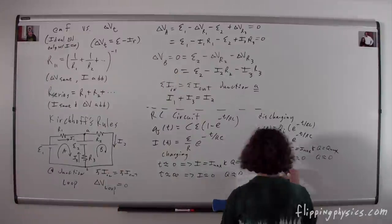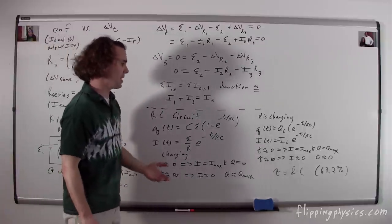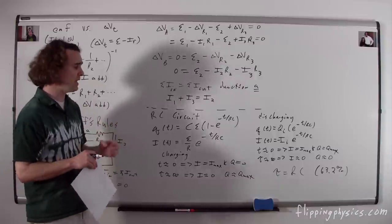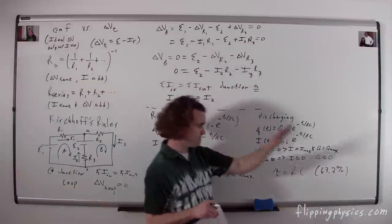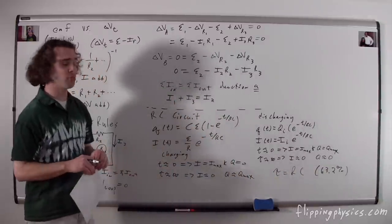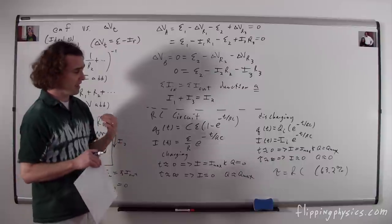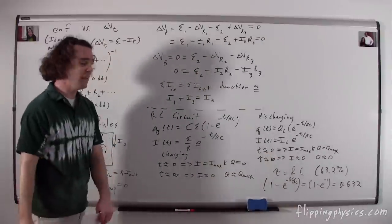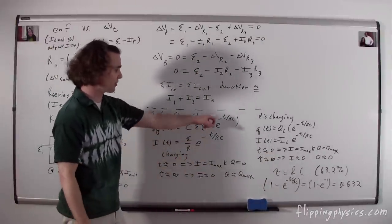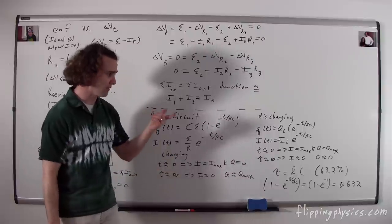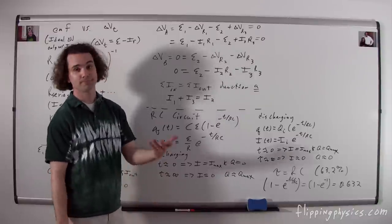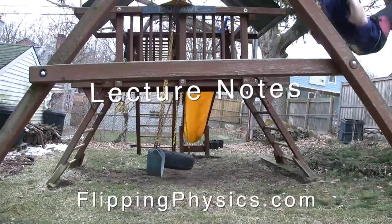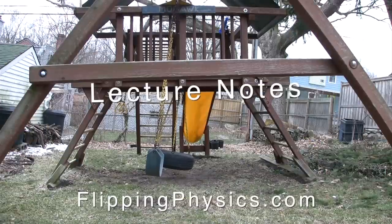The time constant for an RC circuit is τ = RC. It is literally the time it takes to get a 63.2% change in the quantity. That 63.2% is important to memorize — it comes from plugging τ into the charging equation: 1 − e^(−1) = 0.632. If you forget, you can just calculate it. Lecture notes are available at FlippingPhysics.com.